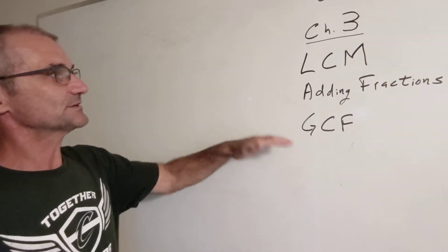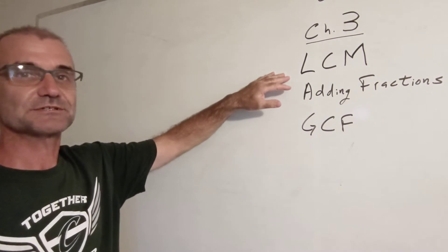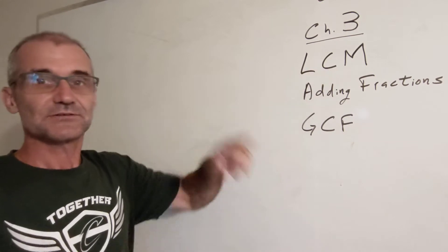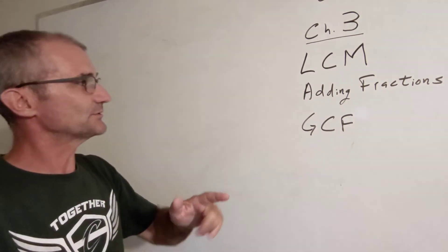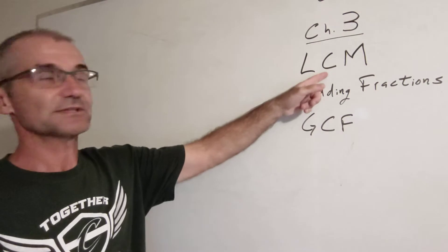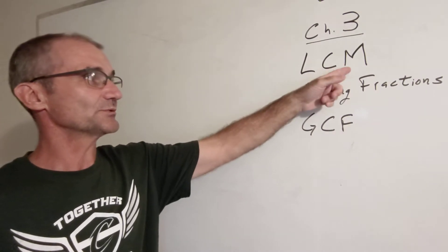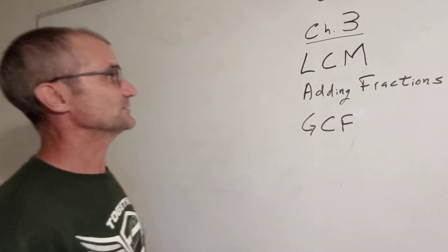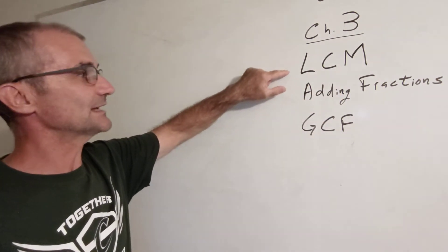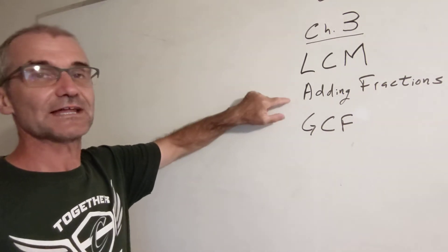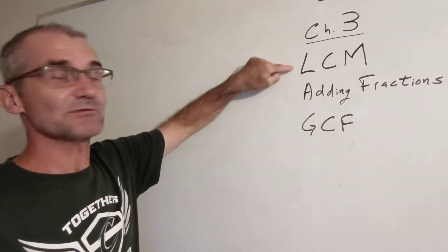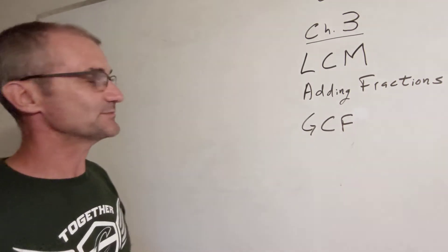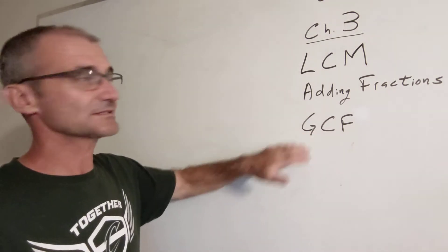So let's first start with the least common multiple. There are three words there: least — that means the smallest one. Common — I'm going to be comparing multiples between different numbers, whichever ones they have in common. And multiples — if I multiply a number by itself, that's a multiple. The least common multiple is really key in figuring out how to add fractions. Understanding least common multiples will help you add fractions, which is a really big skill. Then we'll talk about greatest common factors.